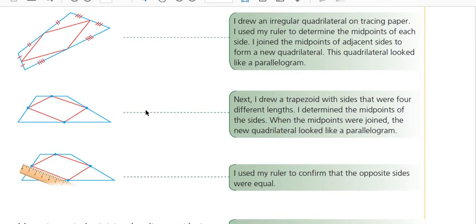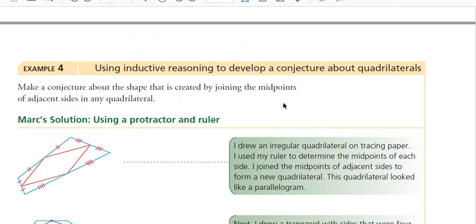This example here looks a little confusing, but this is a sort of a more algebraic reasoning example. So it says, make a conjecture about the shape that is created by joining the midpoints of adjacent sides of any quadrilateral. That's heavy on the language there, but a quadrilateral has four sides. Midpoints are the point on each side that splits that side exactly in half. So you see these are the midpoints. And it says, make a conjecture about when you join the midpoints of adjacent sides that are right next to each other in this fashion. So what happens? What do you get when you do that?